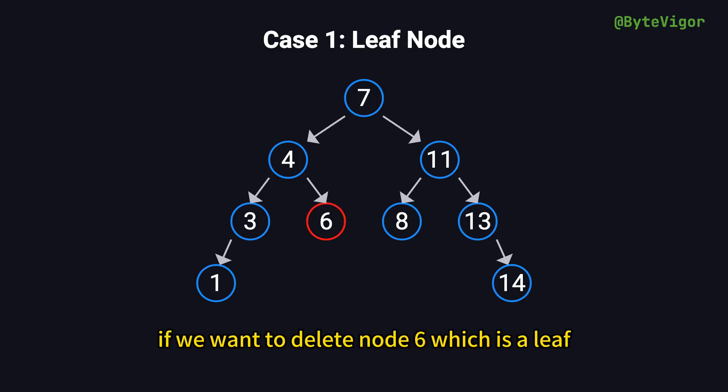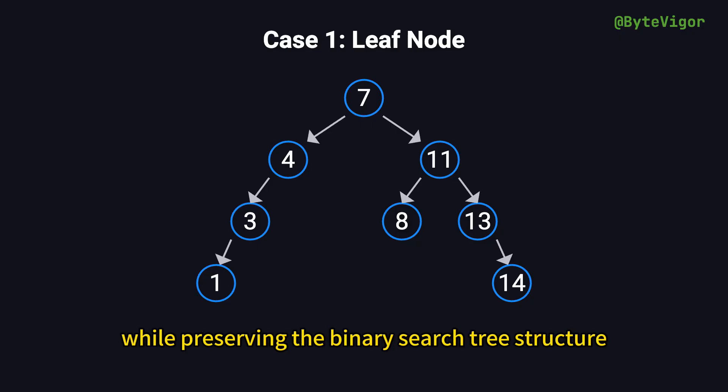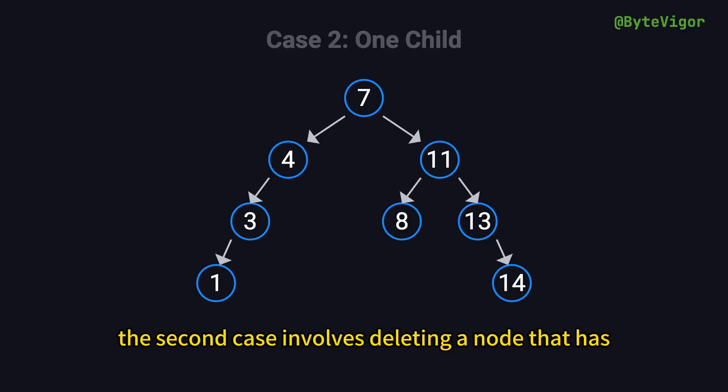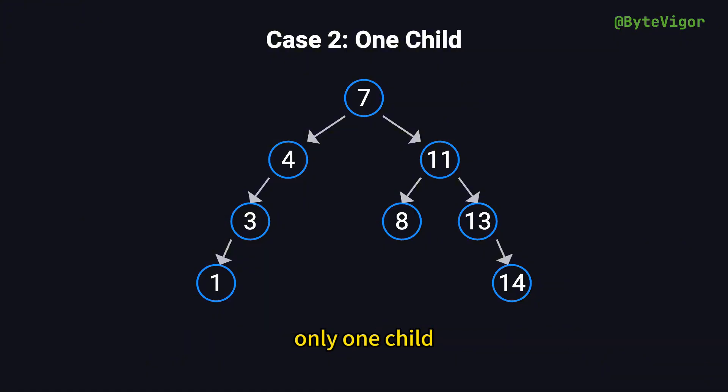For instance, if we want to delete node 6, which is a leaf, we update its parent, node 4, so that it no longer points to node 6. This effectively removes node 6 from the tree while preserving the binary search tree's structure.